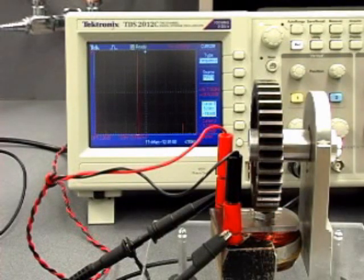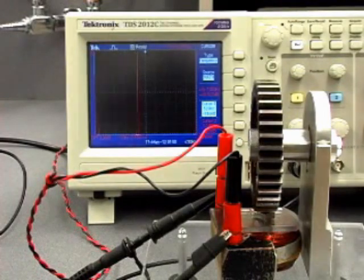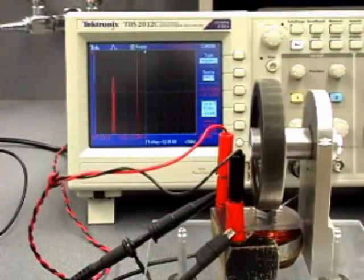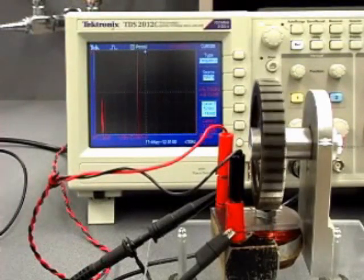We can follow the fundamental frequency using the oscilloscope fast Fourier transform. If we have no movement of the gear teeth or spring, there is no induced current in the coil.